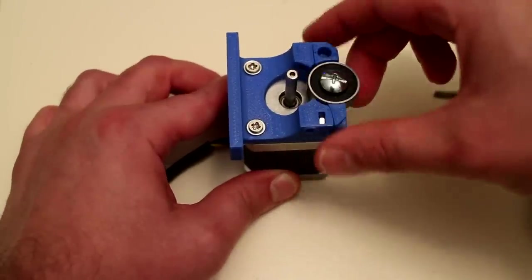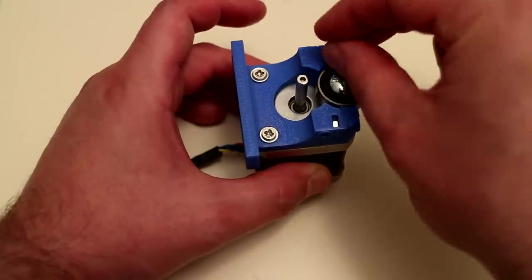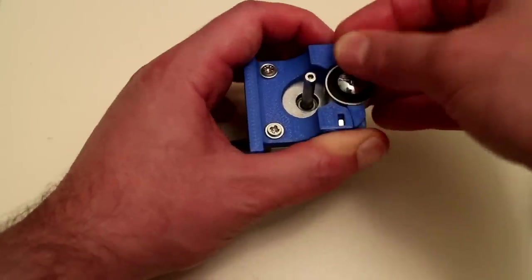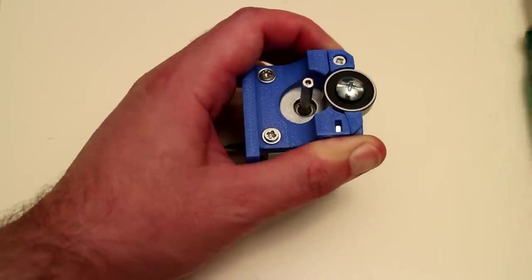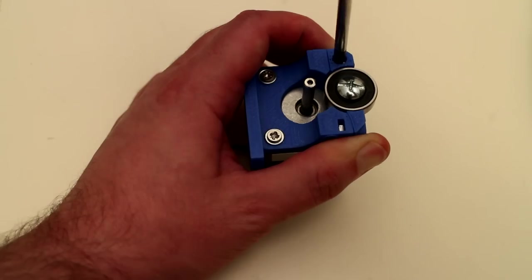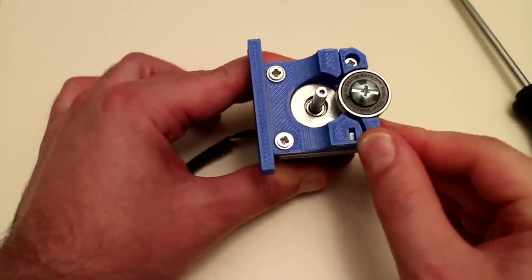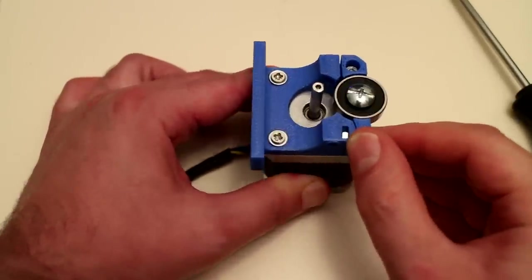Take the idler and place that on top of the base. Take your 15mm M3 screw. Push that down through the idler into the top right-hand side. Also screw that down into the stepper motor. It's now attached and secure and we have just enough play there to adjust the tension on the idler.